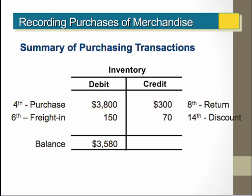Looking at the inventory T-account in our ledger — remember, inventory is an asset — when I purchase inventory I debit $3,800. When I pay freight I debit $150. When I return product I reduce the cost of inventory by $300. When I take the purchase discount I reduce inventory by $70. Altogether, the net effect of my transactions is $3,580.